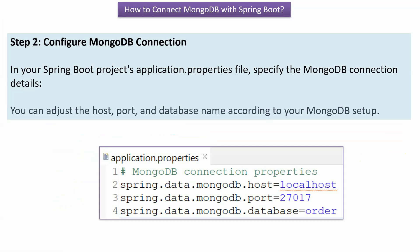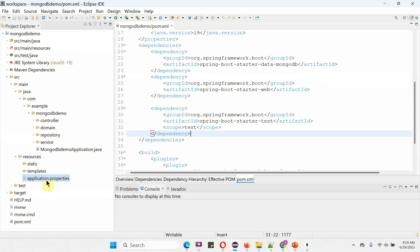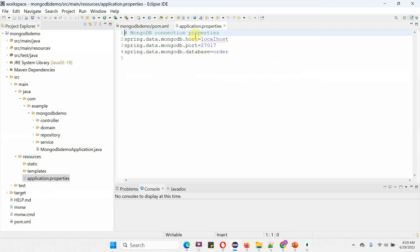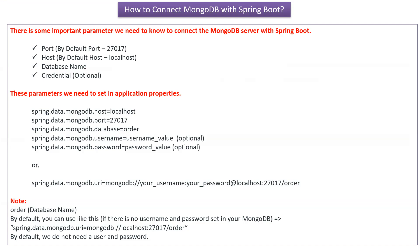The second step is to configure the Mongo Database connection. We can configure that in the application.properties file. We have to specify the Mongo Database host name, which is localhost because it is installed on my system. The second property is the port number — the default port number for Mongo Database is 27017. Then we have to specify the database name; I have specified 'order' as the database name. Inside the resources folder you can see the application.properties file with the MongoDB connection properties.